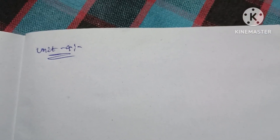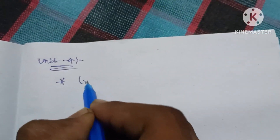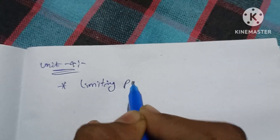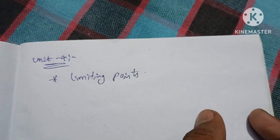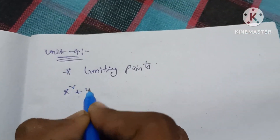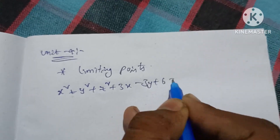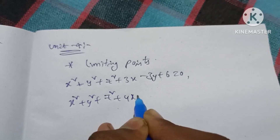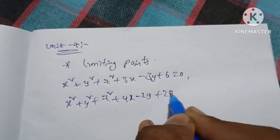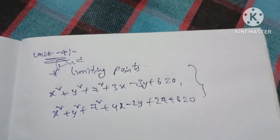How are the notes available? In Unit 4, most of the times you will have a question. Let's find the limiting points. Suppose the equation is x² + y² + z² + 3x − 3y + 6 = 0 and x² + y² + z² + 4x − 2y + 2z + 6 = 0. Find the limiting points.